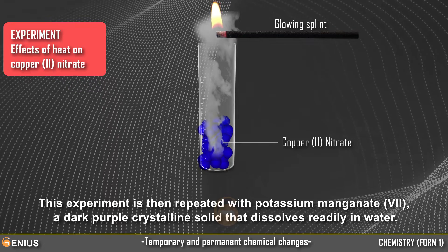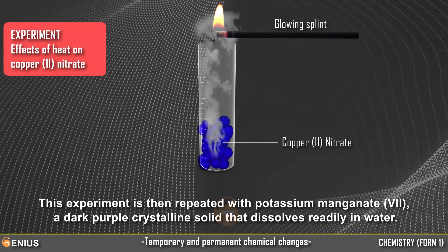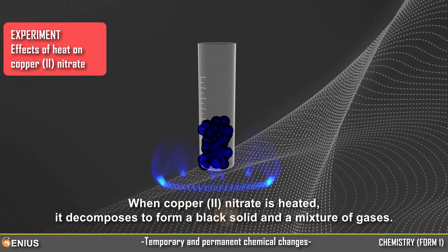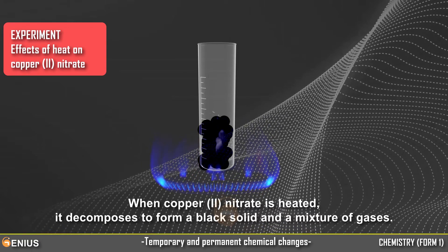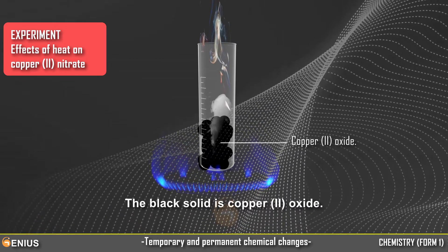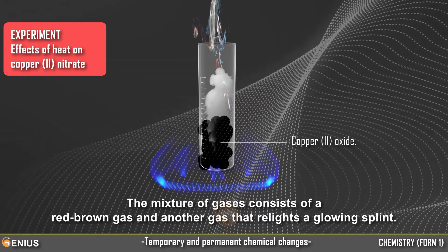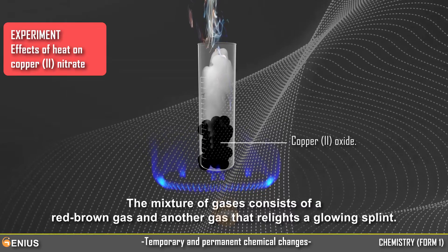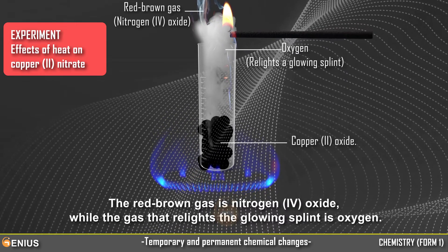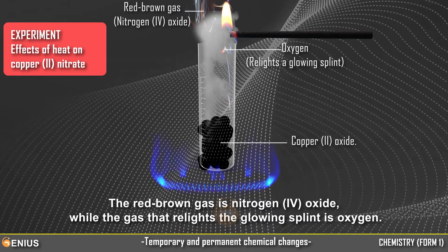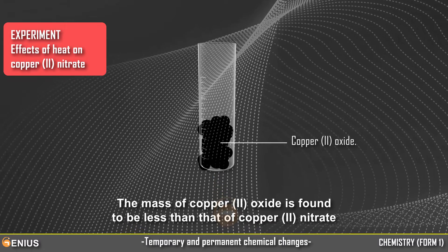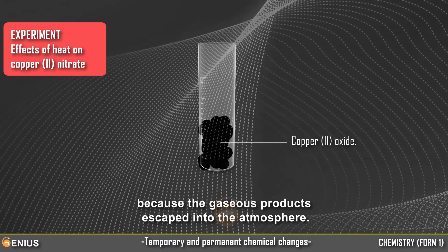This experiment is then repeated with potassium manganate-7, a dark purple crystalline solid that dissolves readily in water. When copper-2-nitrate is heated, it decomposes to form a black solid — copper-2-oxide — and a mixture of gases. The mixture of gases consists of a red-brown gas, nitrogen-4-oxide, and another gas that relights a glowing splint, which is oxygen. The mass of copper-2-oxide is less than that of copper-2-nitrate because the gas products escaped into the atmosphere.